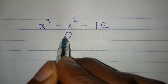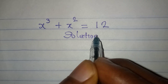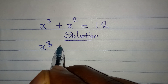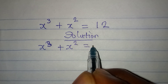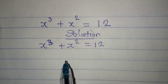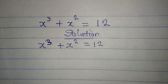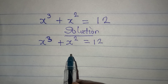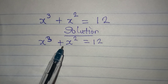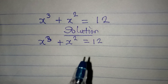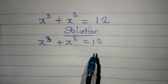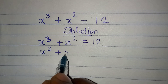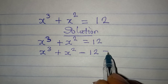Let's provide the solutions to this problem. We have x to the power of 3 plus x to the power of 2 equal to 12. The first thing I will do is bring 12 to the left-hand side, so I have x to the power of 3 plus x squared minus 12 equal to 0.